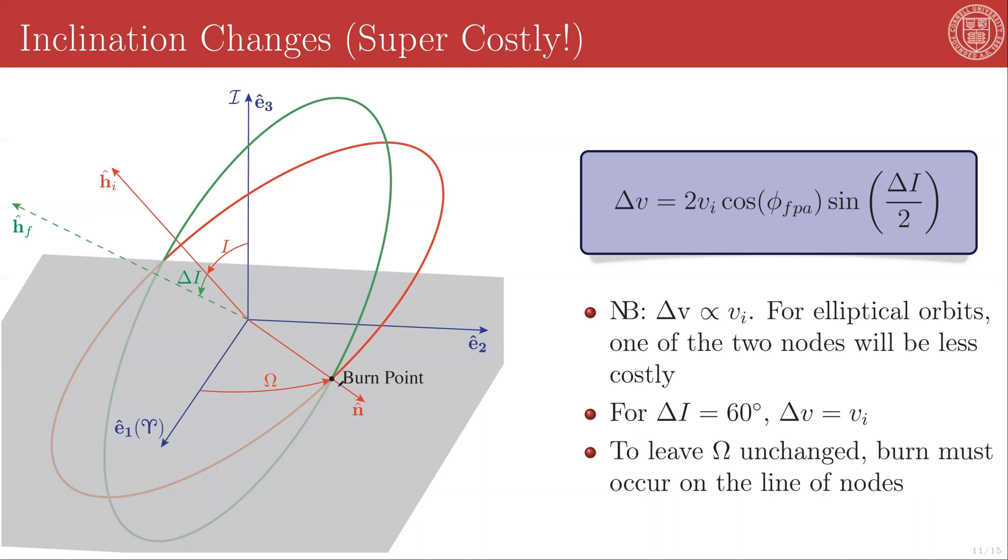So you are only allowed to burn here or on the opposite side at the descending node. The required delta V is then given by twice the initial velocity times the cosine of the flight path angle of where you burn. This is the flight path angle of the burn point times the sine of half of the inclination change.